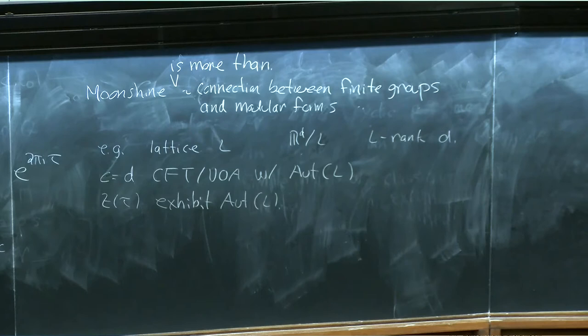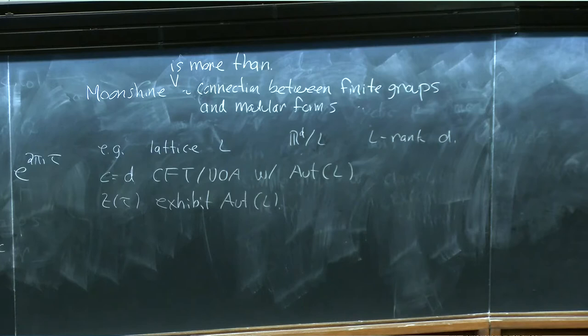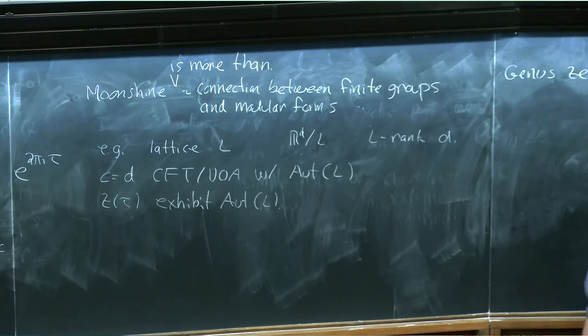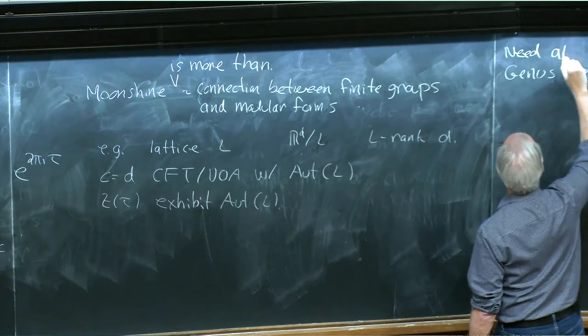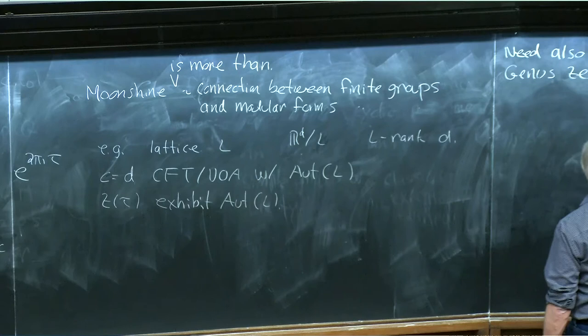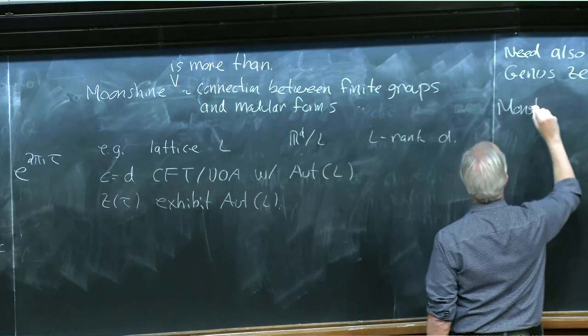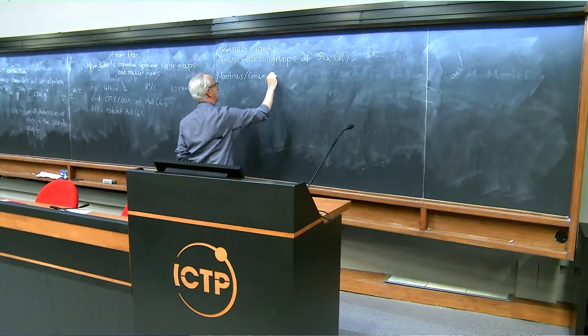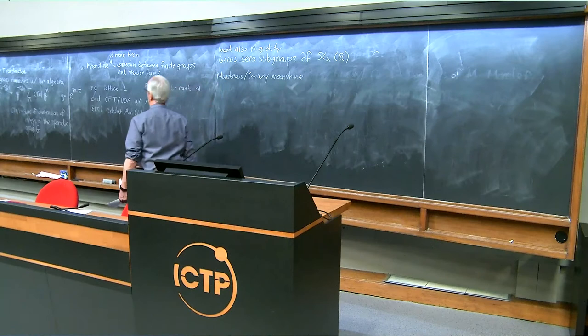But moonshine requires more than this. It requires a certain rigidity, and that rigidity is usually connected with genus zero subgroups of SL(2,R). In the case of monstrous moonshine and also in Conway moonshine, this rigidity appears in the following way: if you have a symmetry group G and you have an element g in G that acts on the state space of the CFT, then you can consider a twined version of the partition function where you take the trace of g in each eigenspace of L_0.